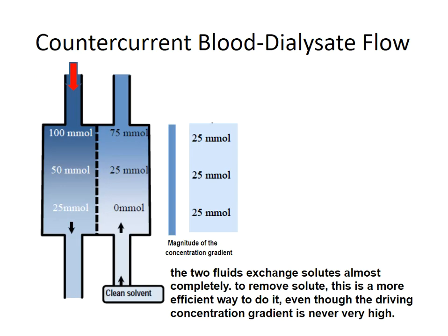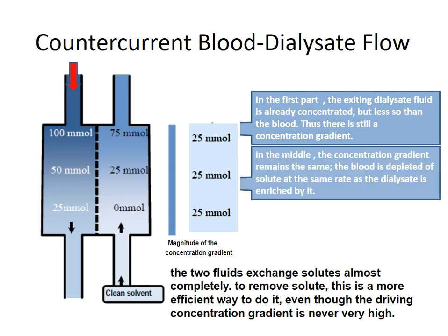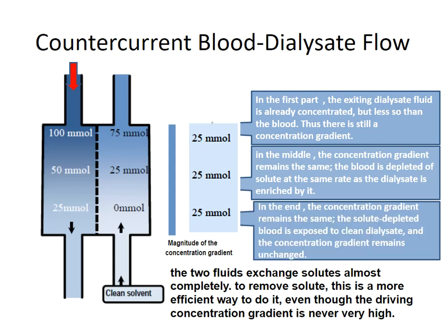In more depth on the counter-current blood dialysate fluid: in the first part of blood entry, the dialysate fluid is already concentrated, but less so than the blood, thus there is still a concentration gradient. In the middle, the concentration gradient remains the same — the blood is depleted of solute at the same rate as the dialysate is enriched by it. At the end of the blood circulation, the concentration gradient remains the same, as the solute-depleted blood is exposed to completely clean dialysate, and the concentration gradient remains unchanging. So the two fluids exchange solute almost completely.